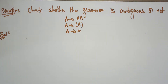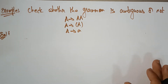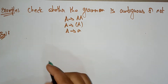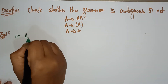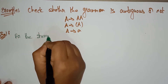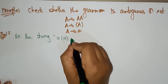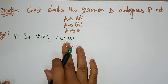Hi students, welcome back. Let's see more examples to check whether a given grammar has ambiguity or not. We need to check whether this grammar is ambiguous or not. The first step is to take one string — I am taking the string a within parentheses, a a.